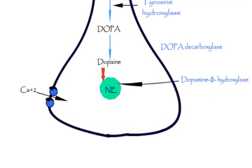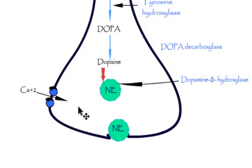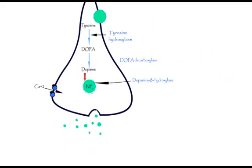The vesicle filled with norepinephrine releases the norepinephrine when an action potential opens voltage sensitive calcium channels and increases intracellular calcium. The vesicle storing norepinephrine fuses with the surface membrane of nerve terminal and releases the norepinephrine.